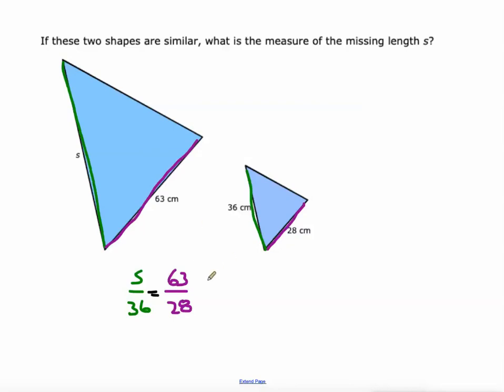Let's do it this way instead. 63 divided by 28 is 2.25. So 28 times 2.25 is 63. So I could do 36 times 2.25 will give me the value of S. So what is 36 times 2.25? That would be 81. So S is 81 centimeters.